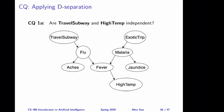All of the questions in this video use the same Bayesian network. We have that if we travel on the subway or take a trip to an exotic area, then we might catch certain diseases like malaria or flu. These diseases may cause different symptoms such as aches on our body, fever, and jaundice. And fever will cause us to have a high temperature. For each question, I will tell you the answer first and then discuss the reasoning. Make sure you pause the video and do the question yourself before watching the discussion.